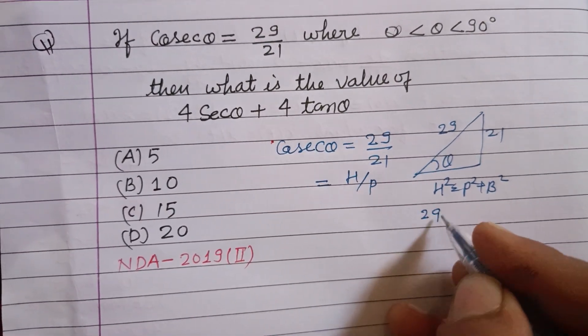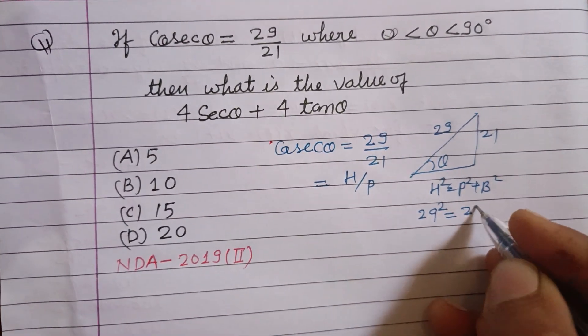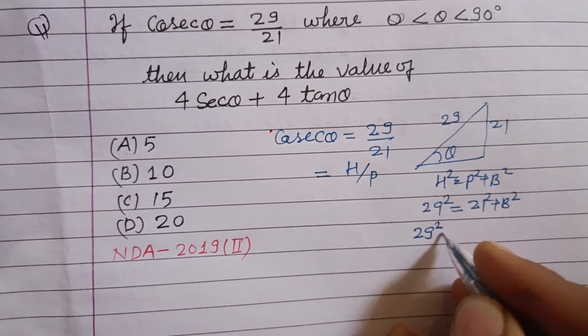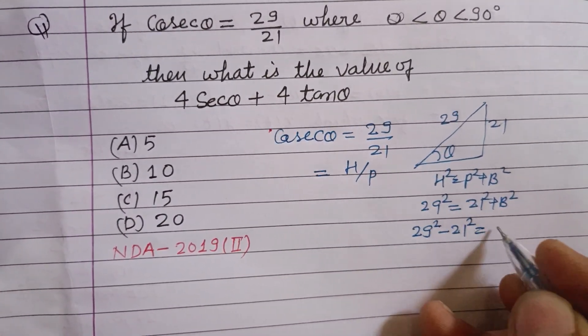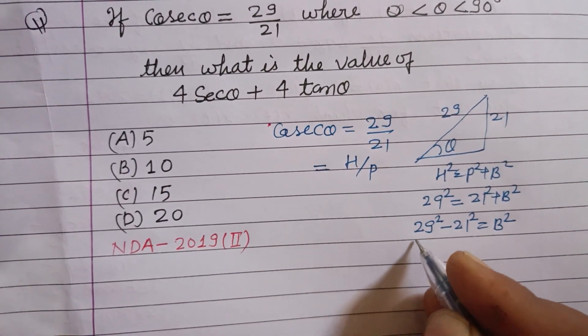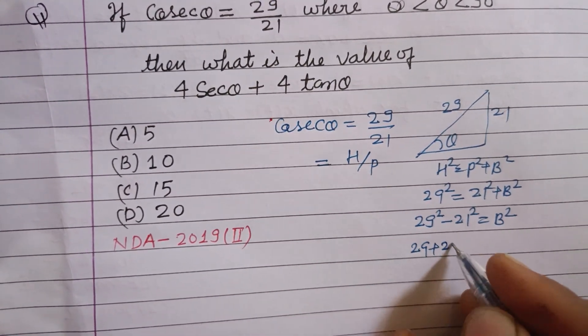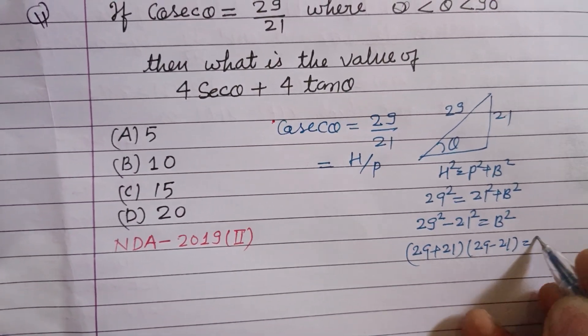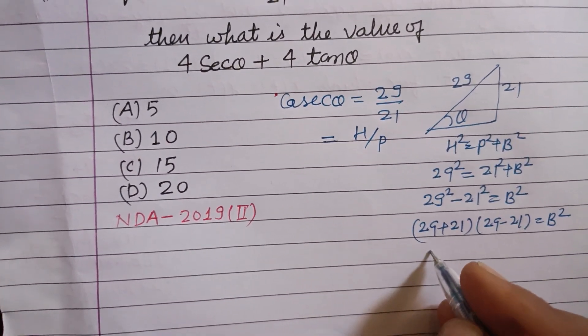Here h is 29 squared, p is 21 squared, and b squared is required. So 29 squared minus 21 squared equals b squared. Using a squared minus b squared equals (a plus b)(a minus b), we get 29 plus 21 and 29 minus 21, that is b squared.